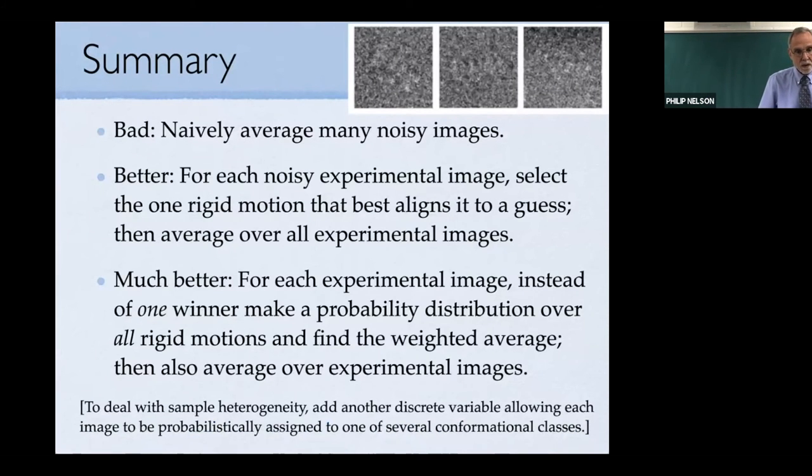Let me summarize. It's bad to naively average over noisy images because you're not going to align them. It's better for each noisy experimental image to select the one rigid motion that best aligns it to your guess, then average that over experimental images. That was a big improvement but it wasn't good enough. It's way better for each experimental image, instead of choosing one winner among all the rigid motions, make a probability distribution over all of them, find the appropriate weighted average, then average that over experimental images. That's the algorithm based on Bayes formula.